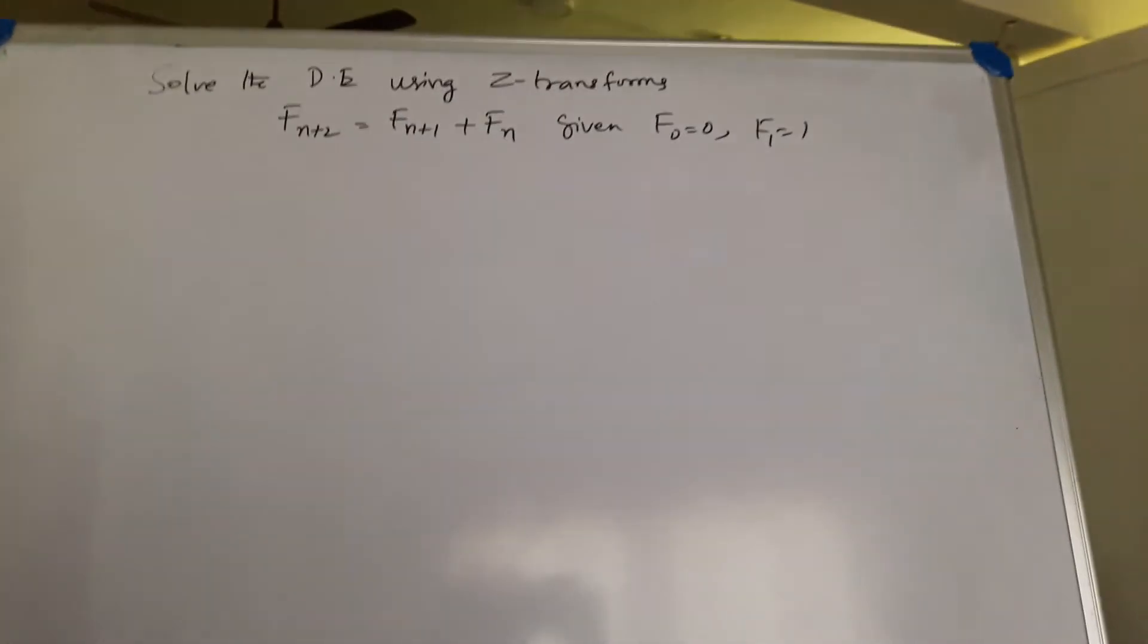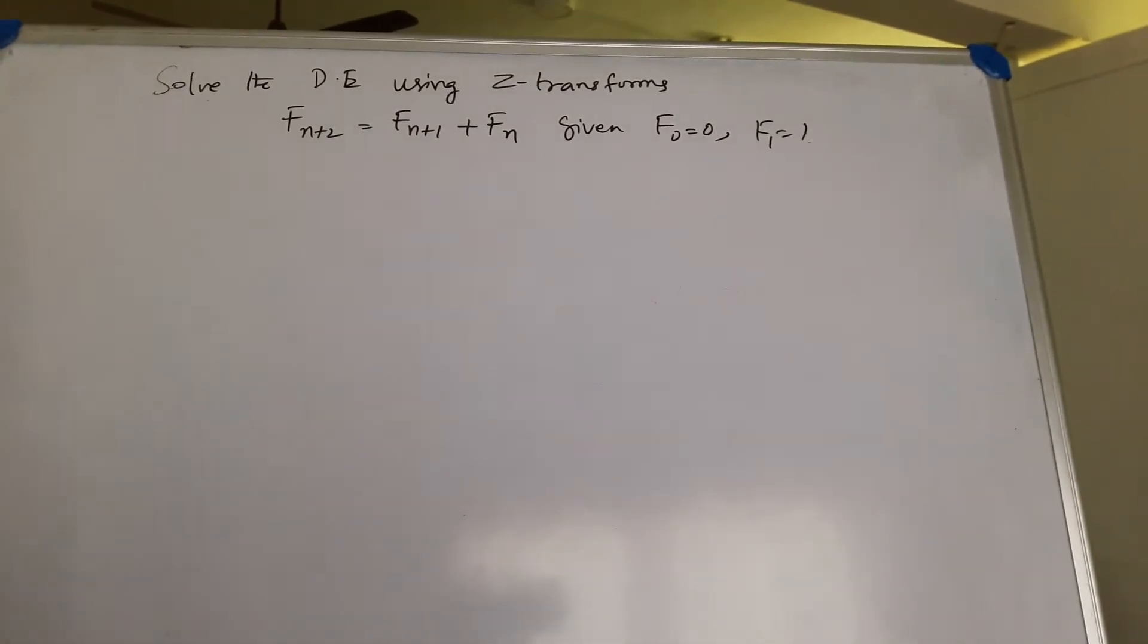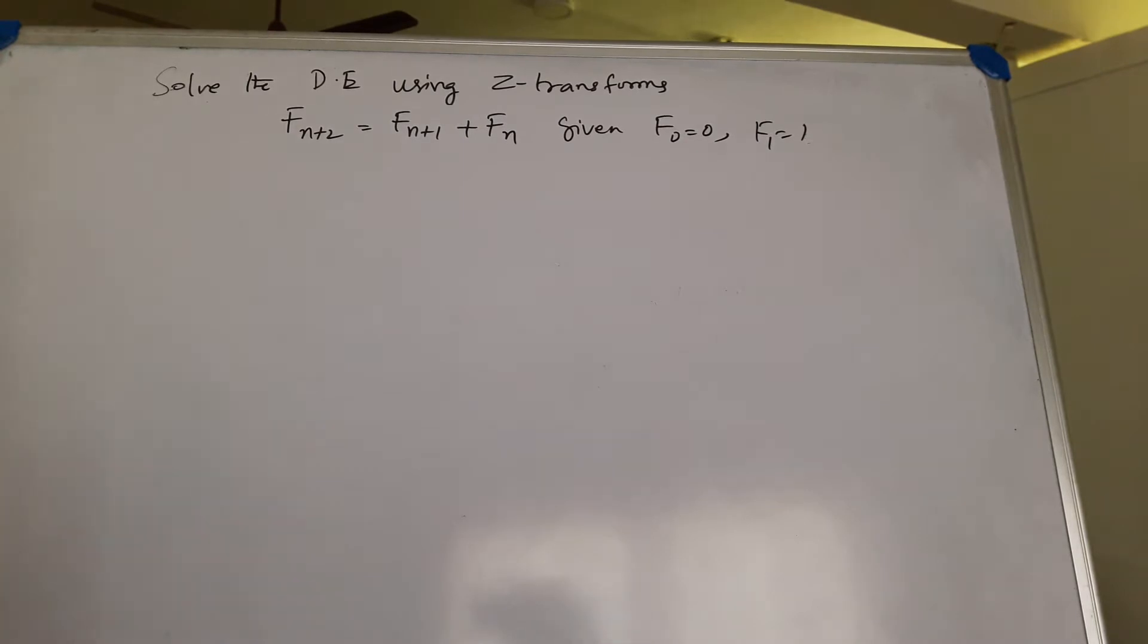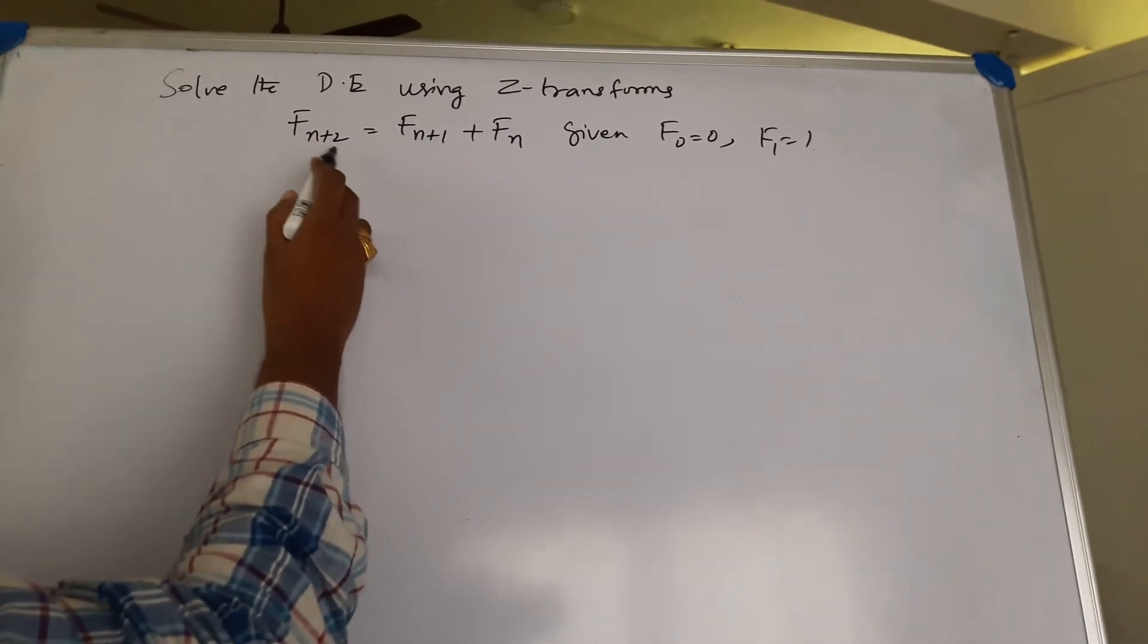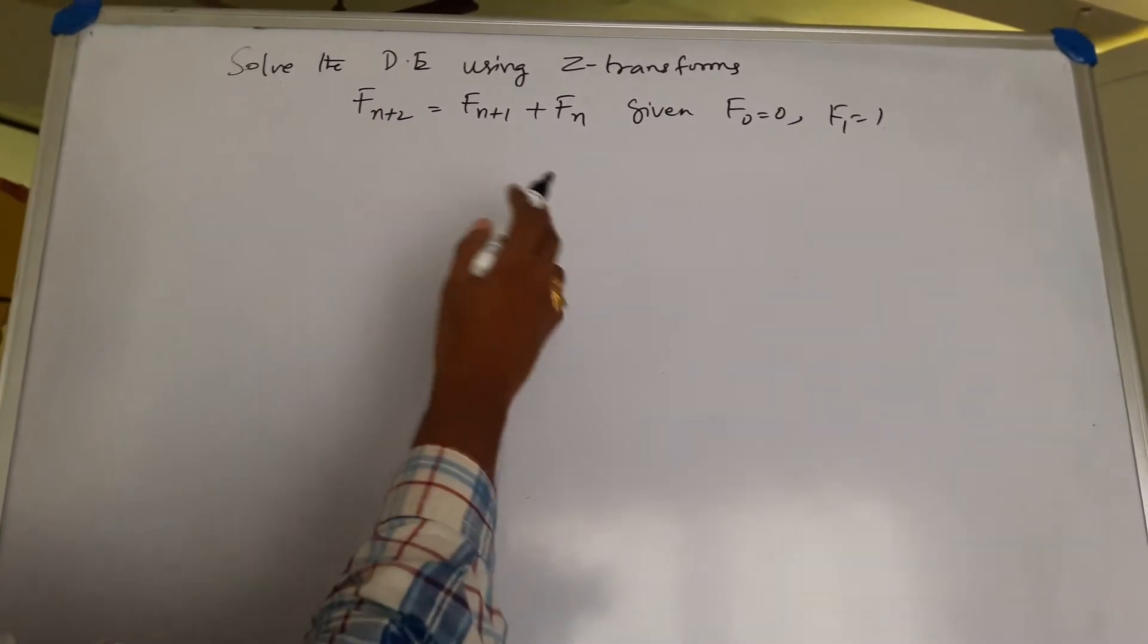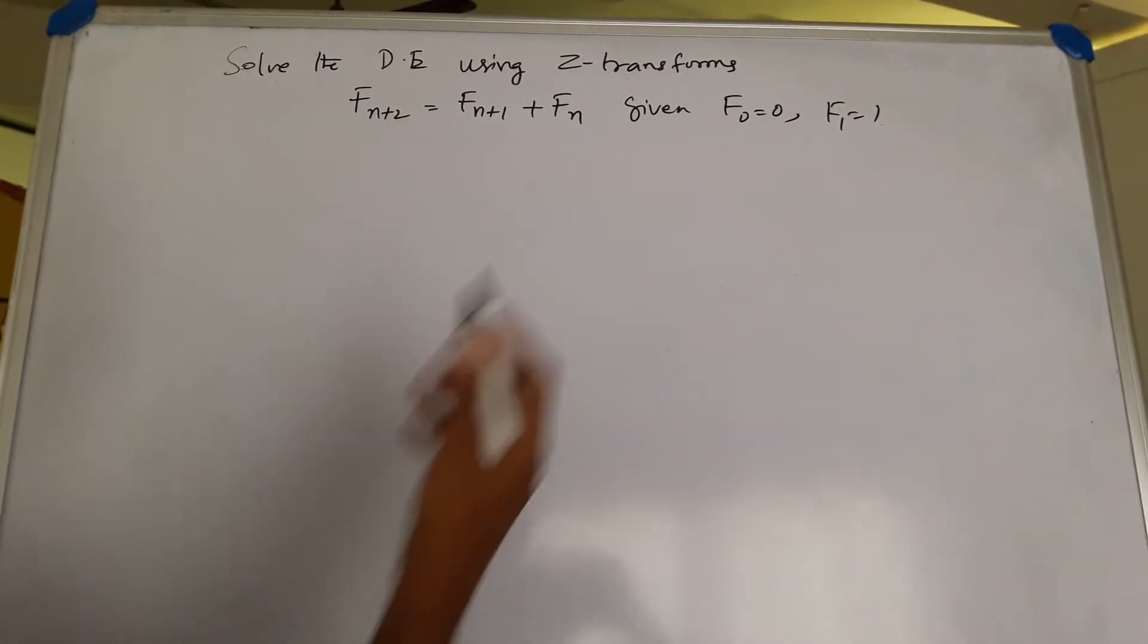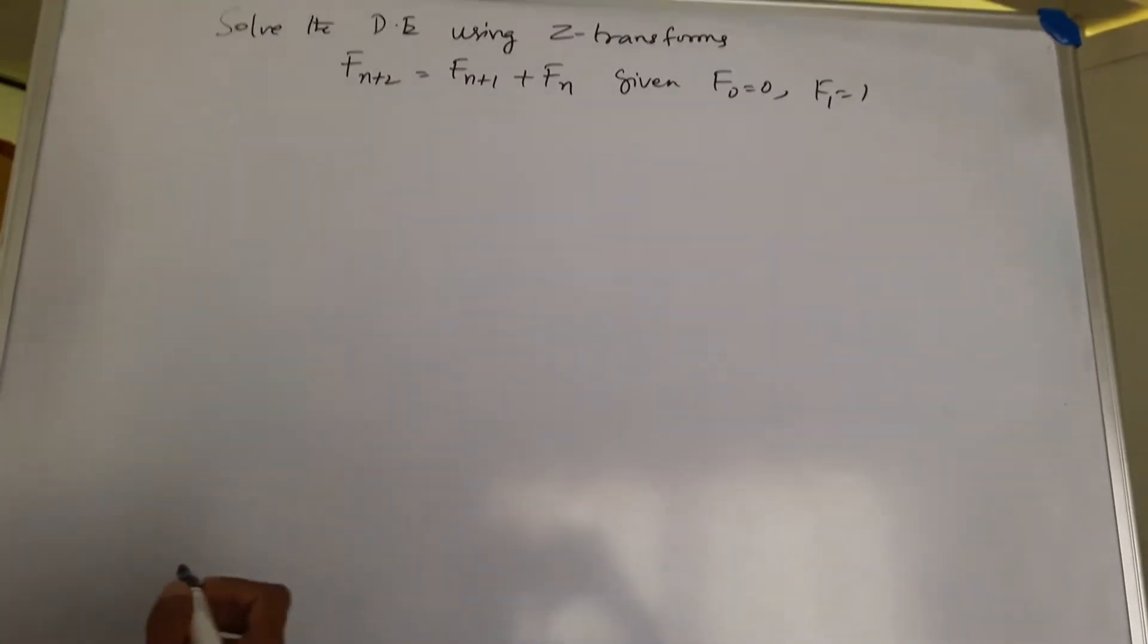Solving the difference equation by using Z-transforms for the Fibonacci series. The function is f_n+2 = f_n+1 + f_n, given F(0) and F(1) are equal to 1 and 0.